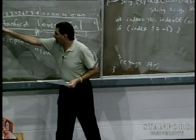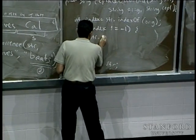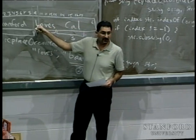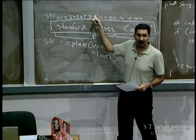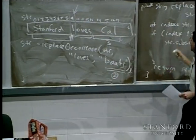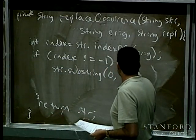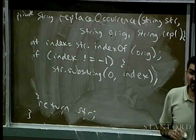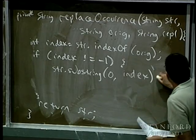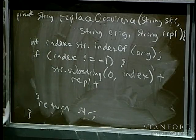I say str.substring(0, index) — I want to start at the beginning and go up to but not including position nine, which is where 'loves' starts. That gives me 'Stanford ' with the space. Then I concatenate the replacement string rpl — which is 'beats'. Then I add str.substring(index + original.length()), which gives me everything from after 'loves' to the end of the string. If I give substring only one index, it goes to the end.